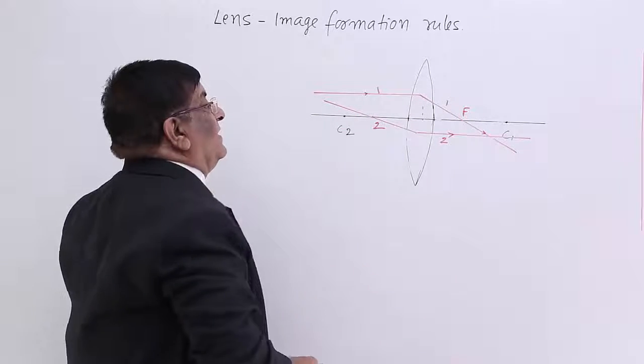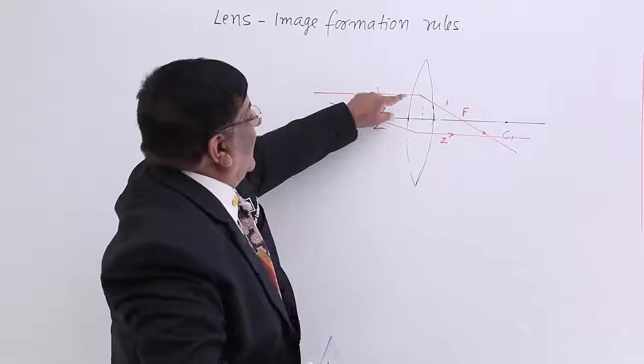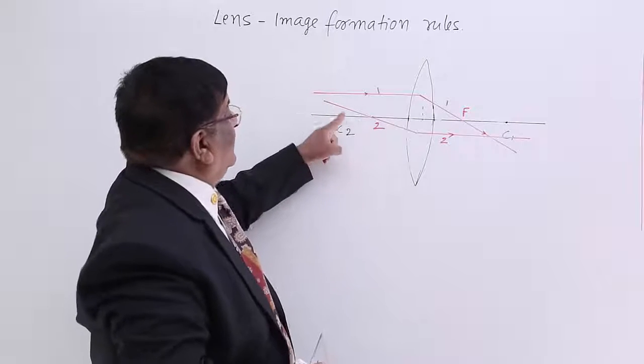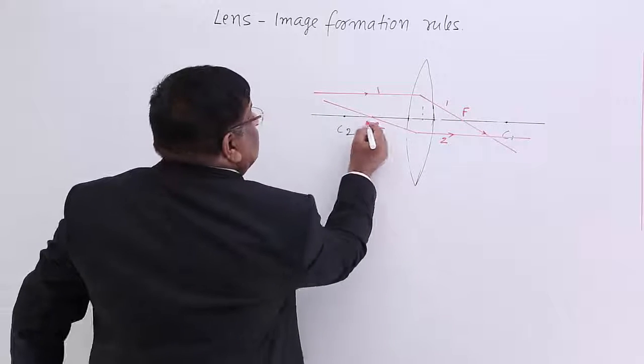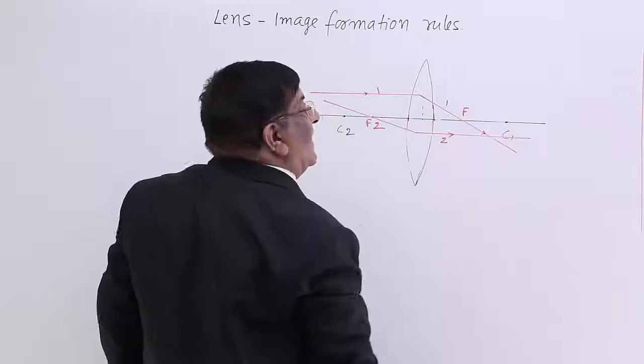Rule number 1: any ray which is incident parallel to principal axis will pass through focus on this side, and any ray which is passing through the focus after refraction will become parallel to the principal axis.